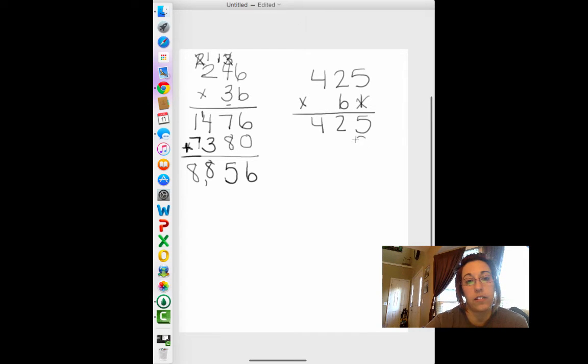We've got our 6, so we start with a zero. 6 times 5 is 30. So, we put a zero down and regroup with 3. 6 times 2 is 12, plus 3 is 15. Regroup. 6 times 4 is 24, plus 1 is 25.